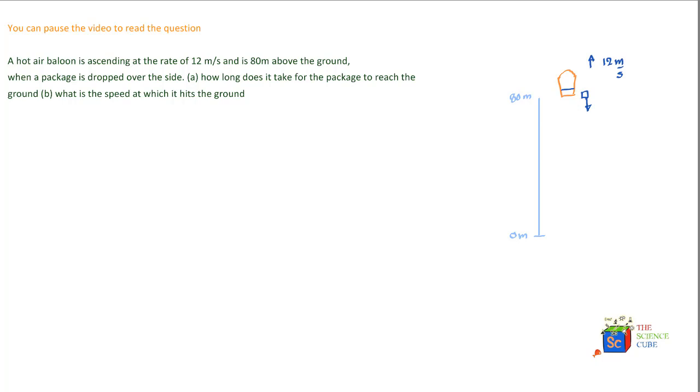So we'll use the equation y minus y0 is equal to the initial velocity of the package plus half a t squared. Now you see the final position y becomes 0 and its initial position is plus 80 meters. Anything in the positive direction is positive and anything measured in the negative direction is negative. So the equation would look something like this: 0 minus 80 is equal to...